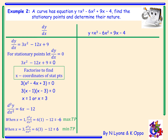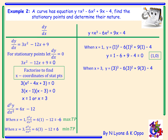The next step is to obtain our y-coordinates. When x is 1: y equals 1 cubed minus 6 times 1 squared plus 9 times 1 minus 4, which gives 1 minus 6 plus 9 minus 4, equalling 0 — giving coordinate (1, 0). When x is 3: y equals 27 minus 54 plus 27 minus 4, which equals negative 4 — giving coordinate (3, -4). The last step is to state the stationary points and their nature: maximum turning point at (1, 0) and minimum turning point at (3, -4).